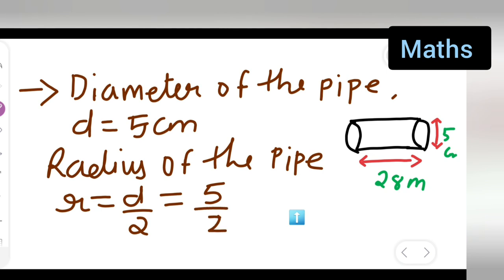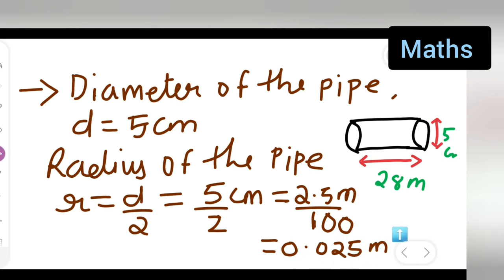5/2 is 2.5 centimeter. We have to convert it into meters, so 2.5 meter upon 100. The answer is 0.025 meter. So your radius r = 0.025 meter.